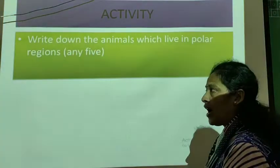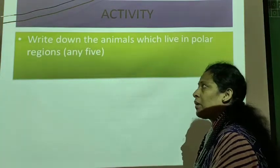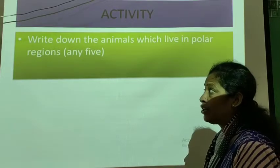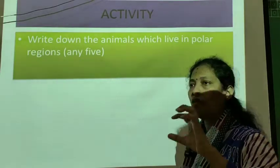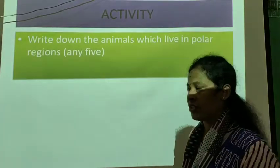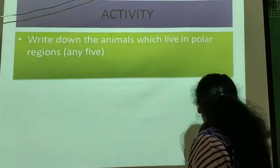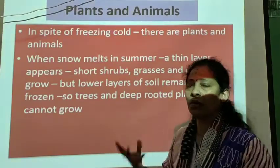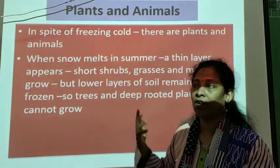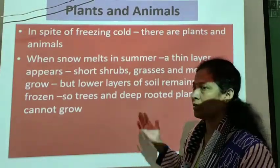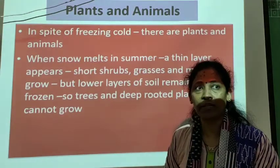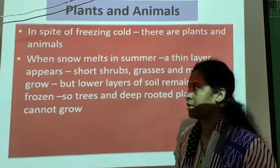I gave you an assignment: find and write five animals which live in the polar regions. Today I am going to start the second part of this lesson — that is the plants and animals. What type of plants are seen here? What type of animals are found here? That we are going to start.